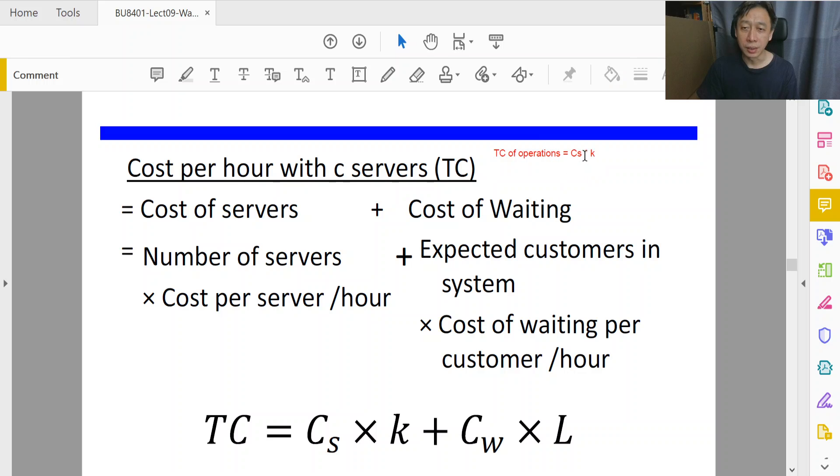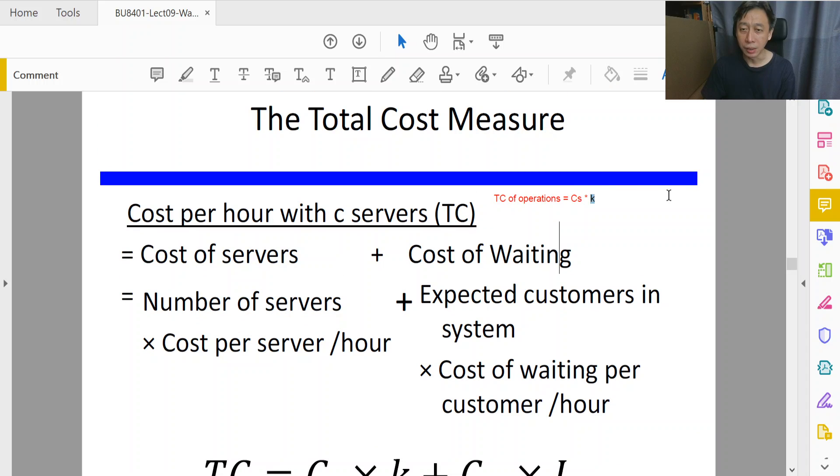The total cost of operations is this constant Cs, which is the amount of dollars per time. So let's put in the annotation here that Cs is dollars per hour. It can be per minute or per day, but let's just use a standardized timing unit. So k is the number of servers.